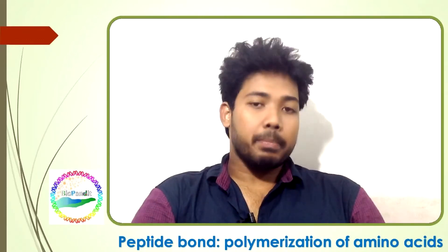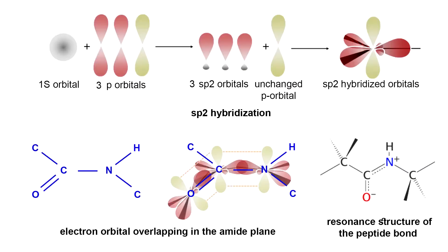Let us discuss the peptide bond from a quantum mechanics point of view. The electrons of the nitrogen atom of the amino group and the electrons of the carbon atom of the carboxylase group are found in sp2 hybridization. This sp2 hybridization turns one spherical s orbital and two dumbbell-shaped p orbitals into three extended sp2 orbitals. One sp2 orbital of the C and one of the N atoms overlap to form a C-N sigma single bond.